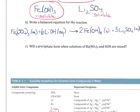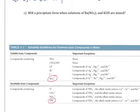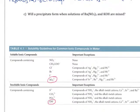The last problem here asks, will a precipitate form when solutions of barium nitrate and potassium hydroxide are mixed. Again, I want to figure out which ions are present.